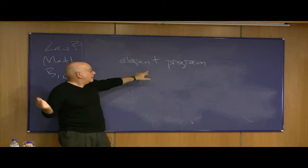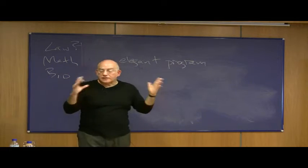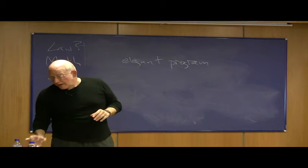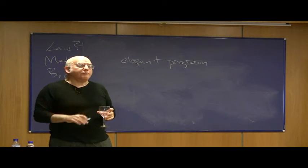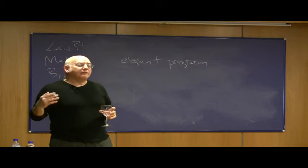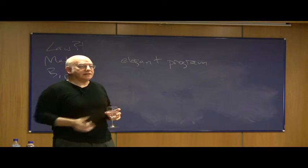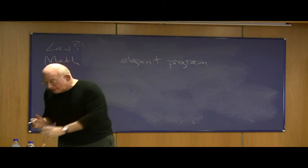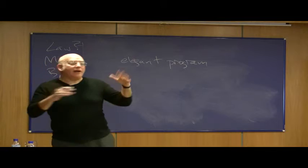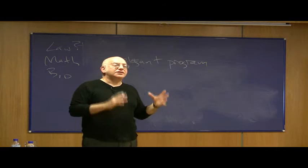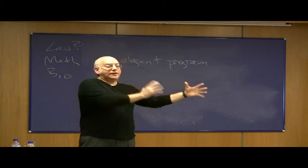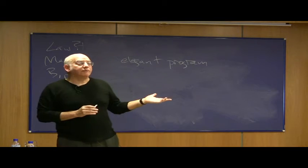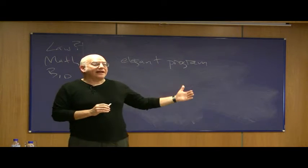So an elegant program is the simplest possible theory for its output. Let me repeat that: given a fixed general-purpose programming language, a program is elegant if no smaller program written in the same language calculates exactly the same output. Using this model of the scientific method, that would be the simplest theory for its output. And there may be several elegant programs that calculate exactly the same thing.